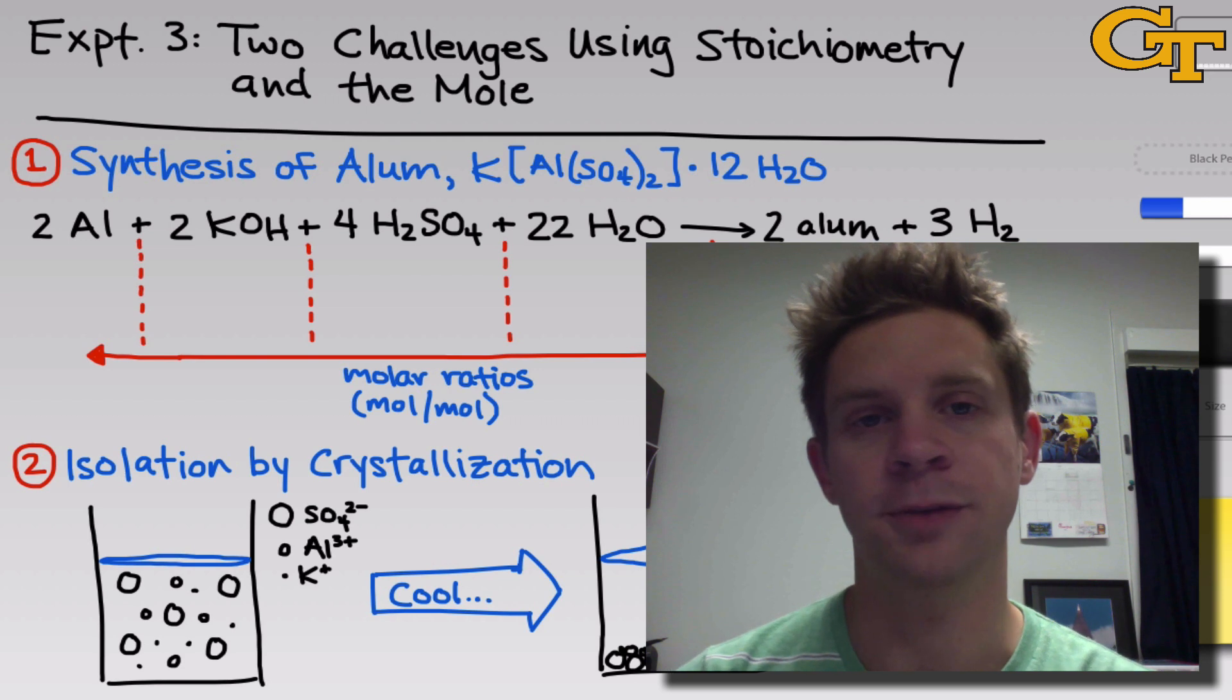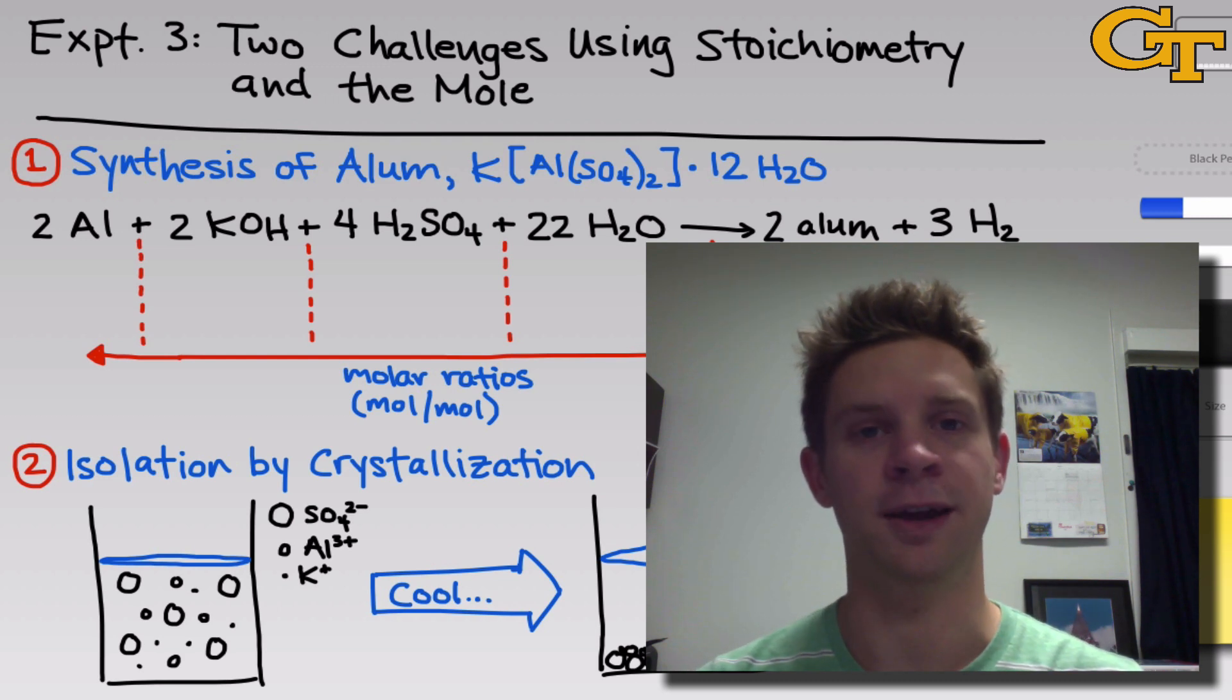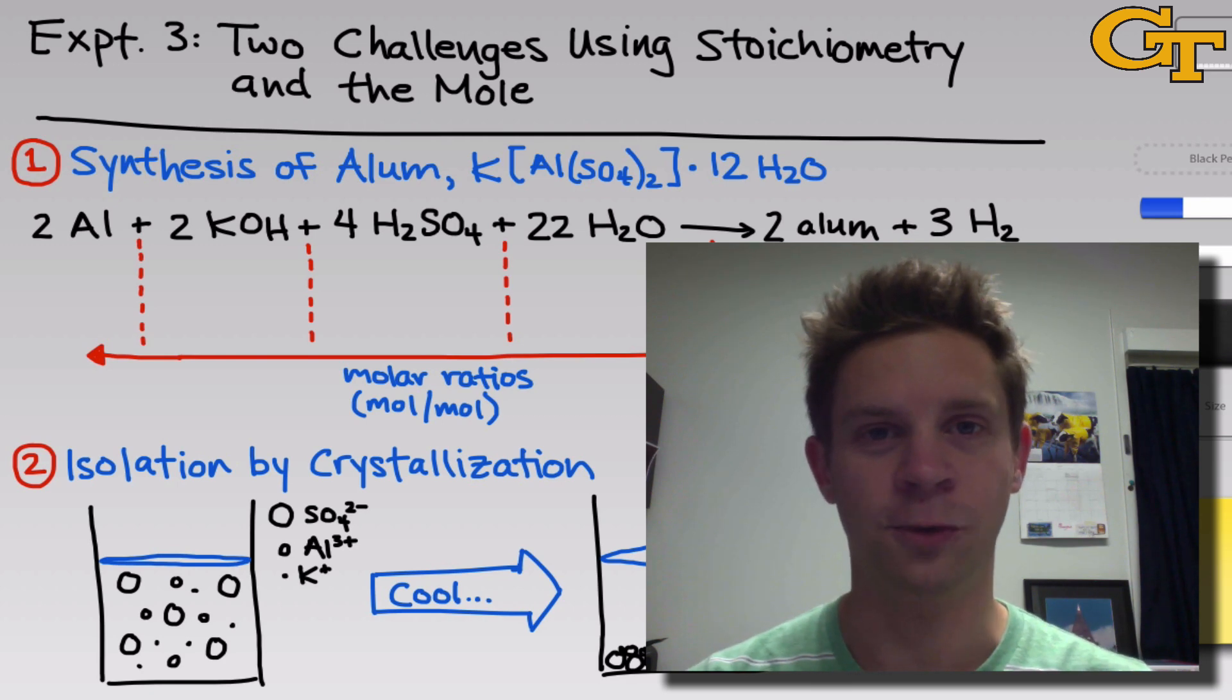The second part of the experiment involves determining the stoichiometric coefficients associated with the oxidation of iron metal by copper sulfate. Here, there are two different oxidation states, plus 2 or plus 3, that can be accessed by the iron metal. And our goal is to determine which of these oxidation states is the one that's actually involved in the product. Believe it or not, we can use stoichiometry to do this by using the right ratios of reactants and examining carefully the products that are formed.